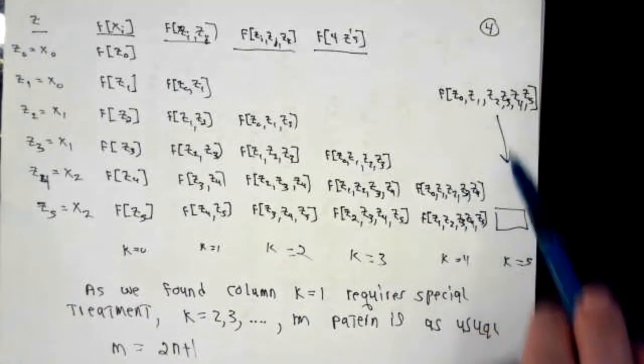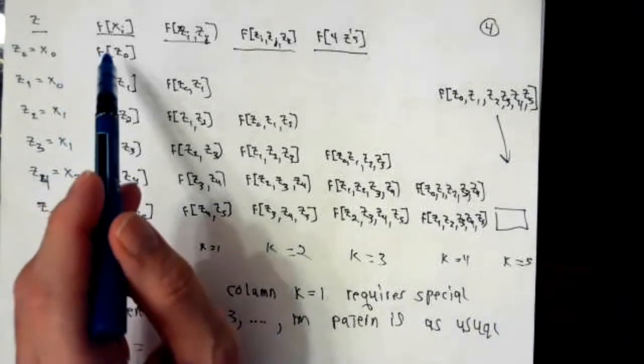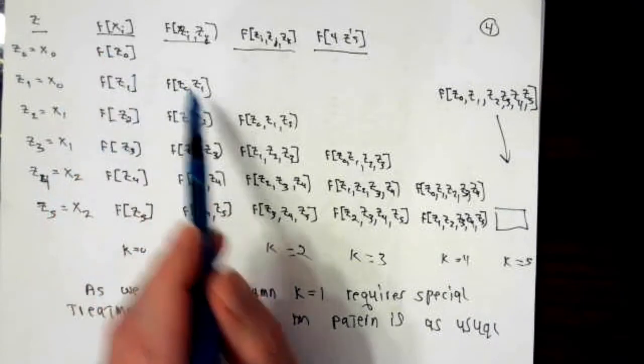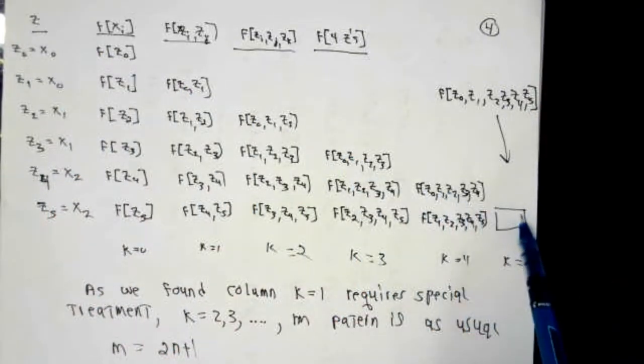That one, and then this last divided difference is this number minus that number, divided by z5 minus z0. It's the usual approach. The coefficients are going to be this number, this number, this number, that one, that one, and that one.